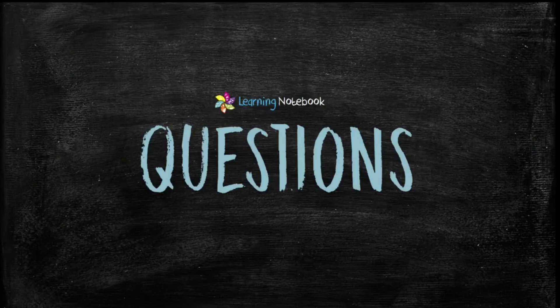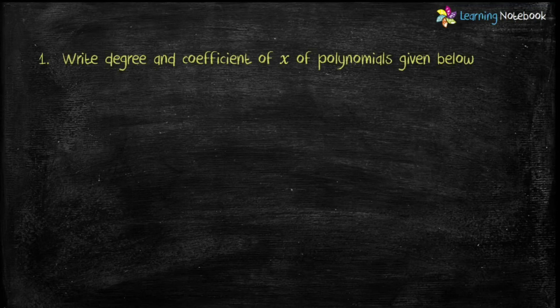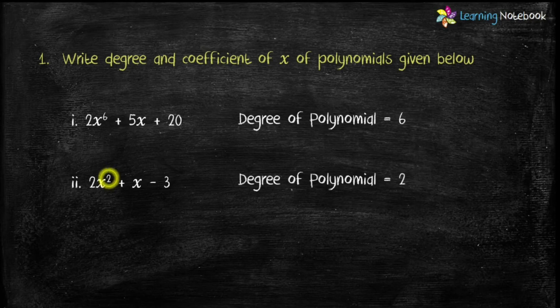Now students, let's do some questions on the basis of what we have learnt so far. The question is: write the degree and coefficient of x of the polynomials given below. First part is 2x raised to the power 6 plus 5x plus 20. Here the highest power of variable x is 6, therefore the degree of this polynomial is 6. Second part is 2x squared plus x minus 3. Here the highest power of variable x is 2, therefore the degree of this polynomial is 2.